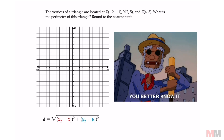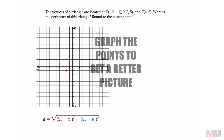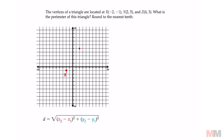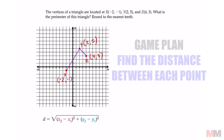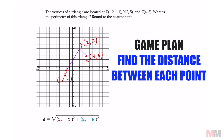Negative 2, negative 1 will be your x point; 2, 5 will be your y; and 4, 3 will be your z. If you look at this triangle, there are three line segments that we're going to each find the distance for, and after we do that, we can find the perimeter.